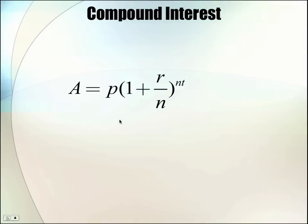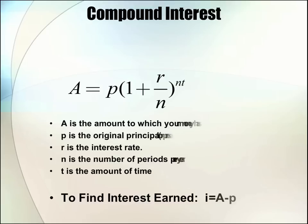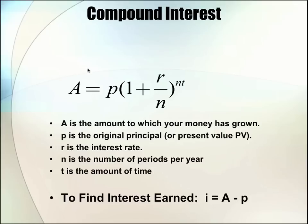So here is your compound interest formula. There's actually a formula that will calculate this out rather than doing the simple interest formula every time. So the way this formula works, A right here is the amount to which your money will grow. So that's really your principal plus your interest.